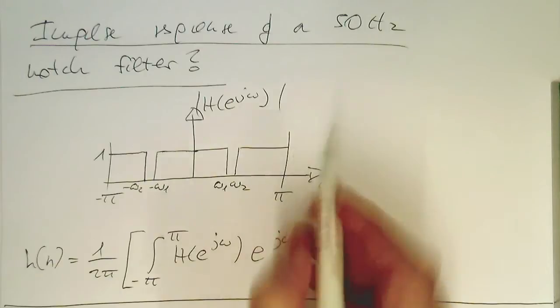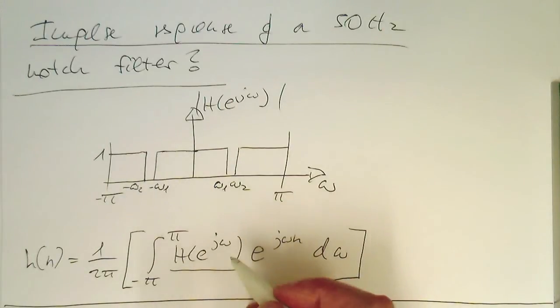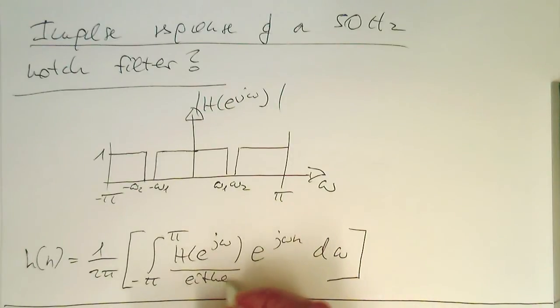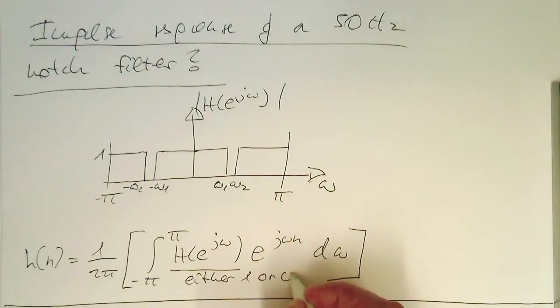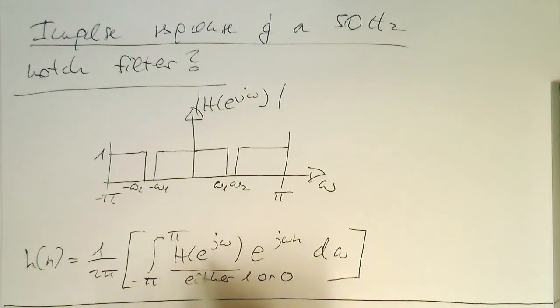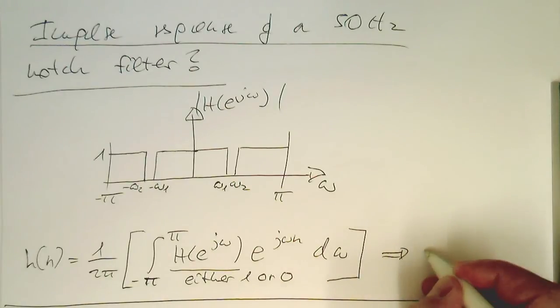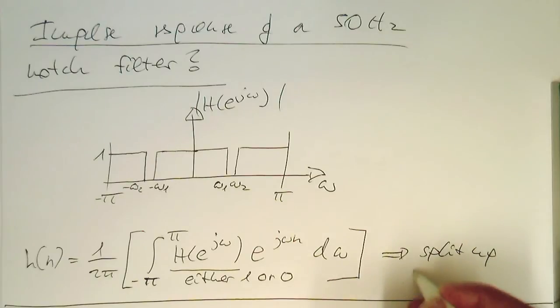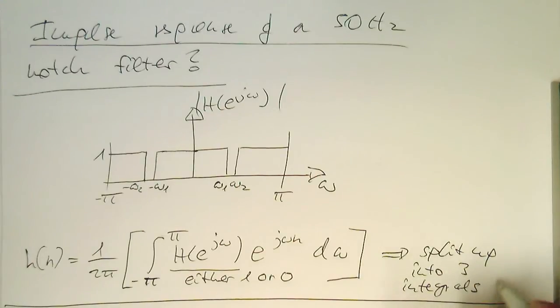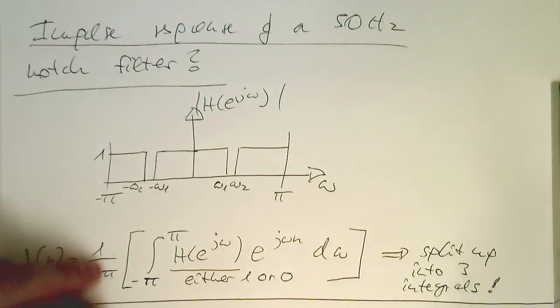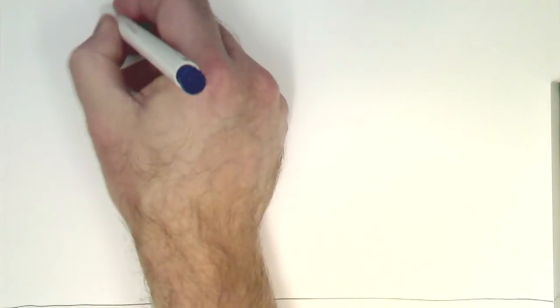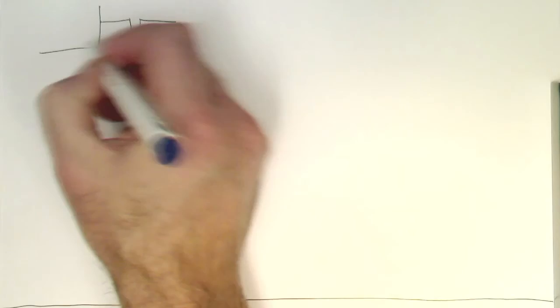Since the function H is either 1 or 0, this integral can be split up into three integrals where this factor is just 1. Let's split this up into three integrals — let's quickly redraw the frequency response a bit smaller here to save space.